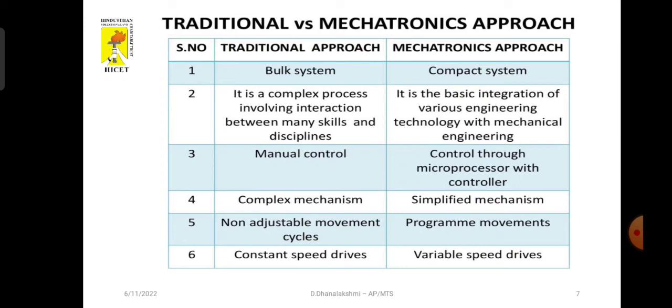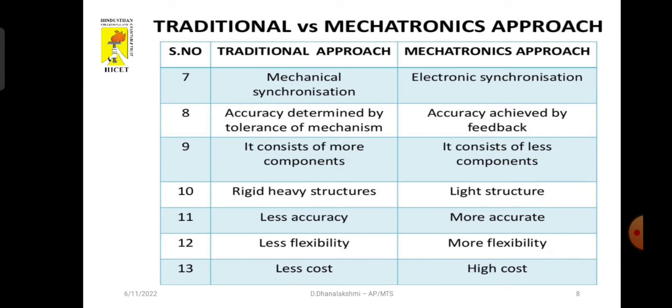In traditional approach, it is a bulk system because many parts are mechanical. Mechatronics approach, it is a compact system. In traditional approach, it is a complex mechanism because the mechanical part only is first designed, after that control part is added. But mechatronics approach, it is a simplified mechanism. Because of the absence of mechanical parts, mechatronics approach is a light structure, more accurate, more flexibility and less components and high accuracy.